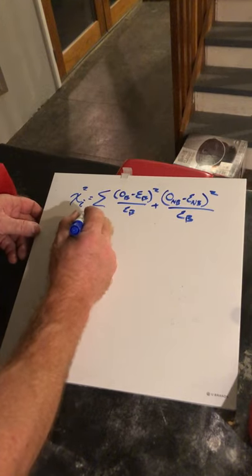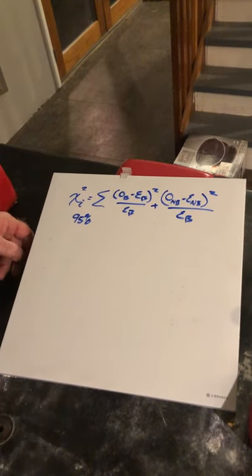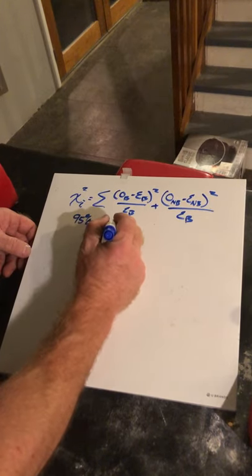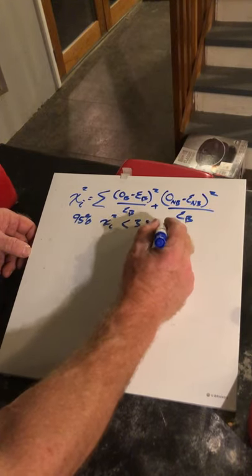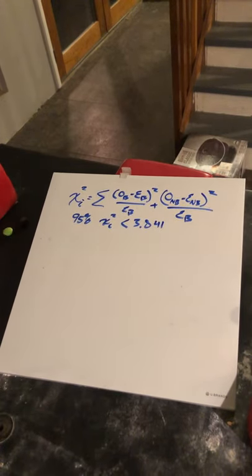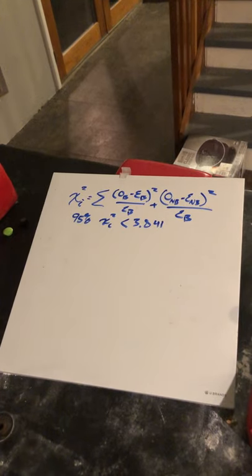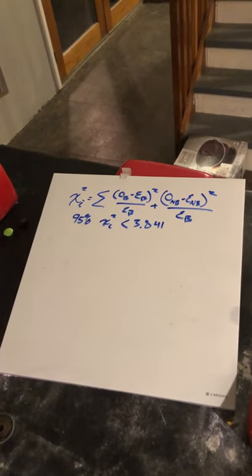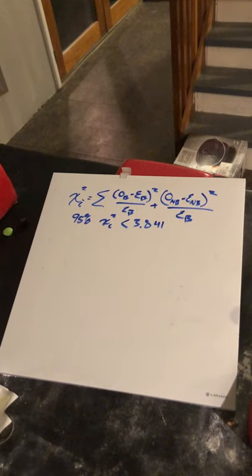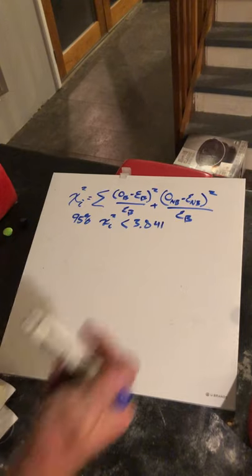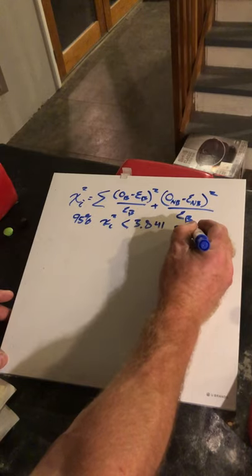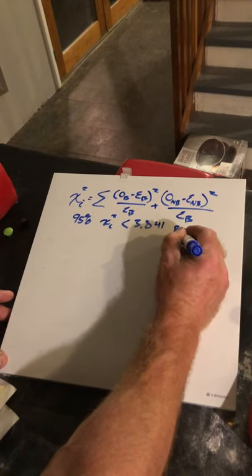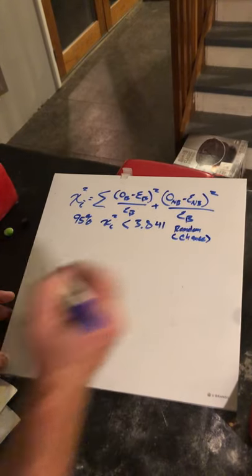for 95% confidence, chi-squared has to be less than 3.841. So when we calculate the results from our matches, if it's less than 3.841, it's random. This means random or chance, okay?